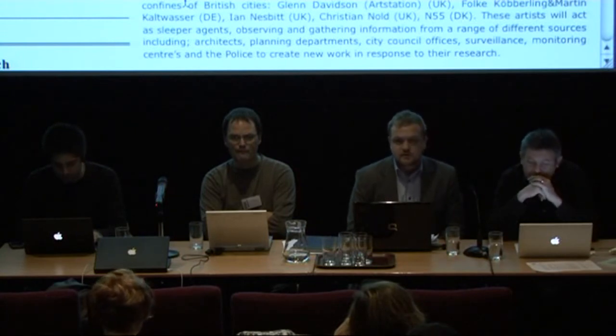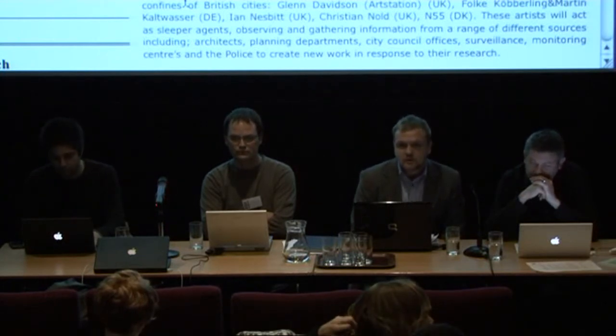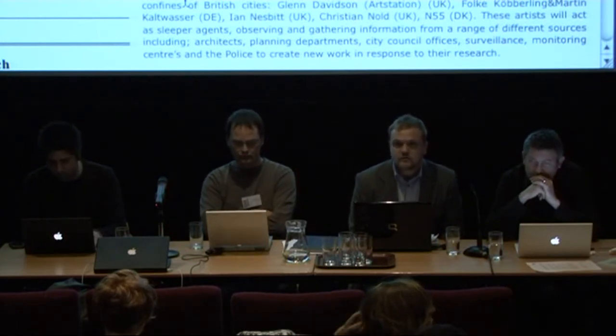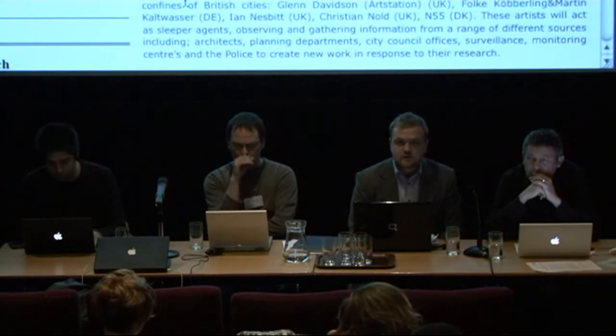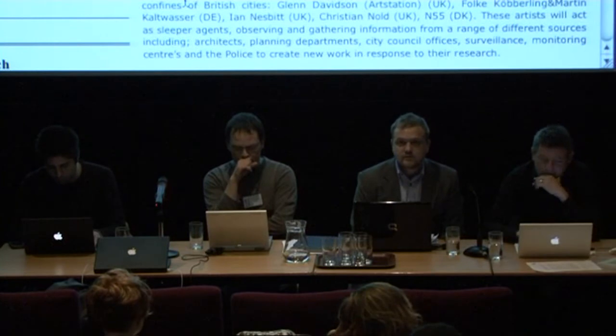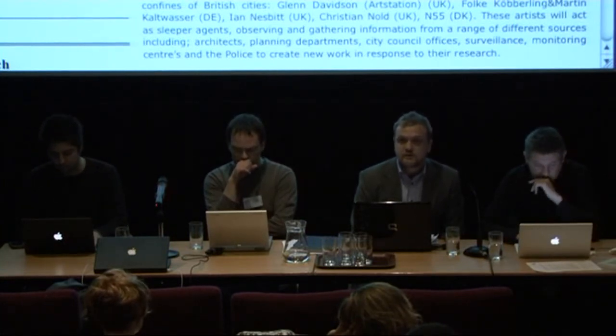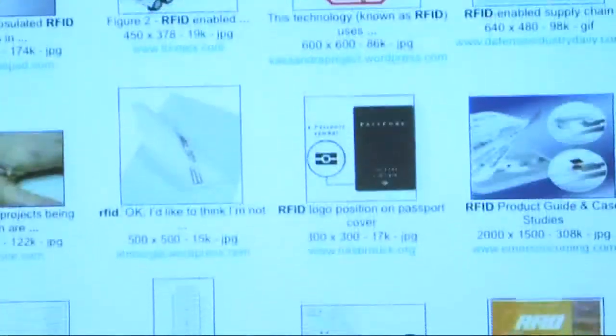If you want to think about how many of these things — when I say the Internet in things — how many things in the world might be online, think about barcodes and how many barcodes there are already in the world. Already in supply chain management, many companies are forgoing the barcode and replacing them with RFID chips — radio frequency identification chips — that allow companies to monitor their supply chain management around the world to a much greater extent. There are already billions of these chips in the world, and the EU thinks they will increase 300-fold in the next few years.